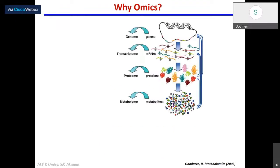Omics first. As we know, this is the central dogma of life. We all used to think that once we understand and once we have read the whole genome, we should be able to really predict what is the phenotype. And this was probably the secret of life that we were all looking forward to, but that has not really turned out as we expected.